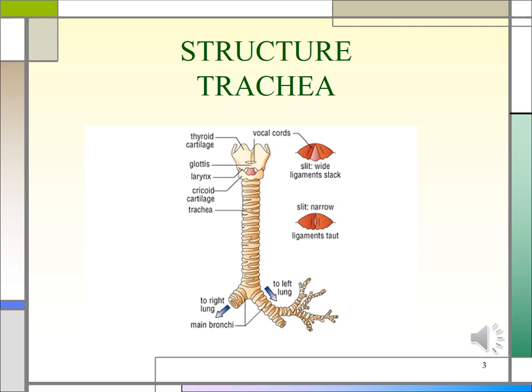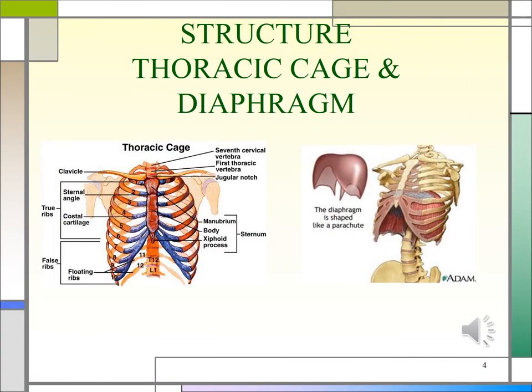A cough is triggered by irritants of the larynx, trachea, or bronchi. The thoracic cage is a bony structure with a conical shape which is narrower at the top. It is defined by the sternum, 12 pairs of ribs, and 12 thoracic vertebrae. Its floor is the diaphragm, which is a muscular tendon and septum that separates the thoracic cavity from the abdomen.